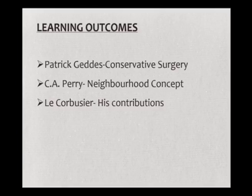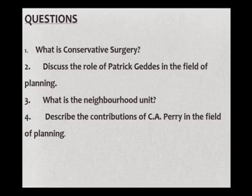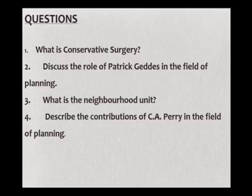Le Corbusier organized CIAM — Assembly of Constructors for an Architectural Renewal — which systematically studied problems of construction, architecture and city planning. He was one of the very few planners who combined urban planning, architecture and construction of individual buildings, believing you couldn't completely segregate these three theories. At the end of this lecture, we have seen Patrick Geddes and conservative surgery, C.A. Perry and his concept of neighborhoods, and started with Le Corbusier and his contributions. Review questions include: What is conservative surgery? Discuss the role of Patrick Geddes in planning. What is the neighbourhood unit? Describe the contributions of C.A. Perry in the field of planning.